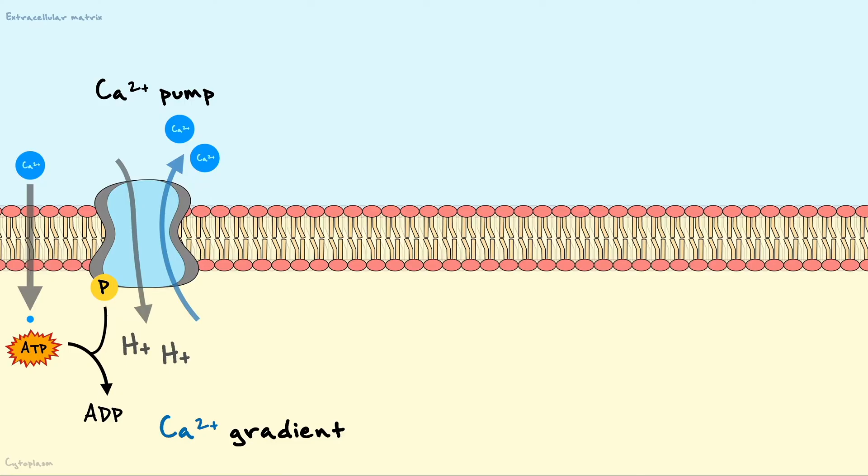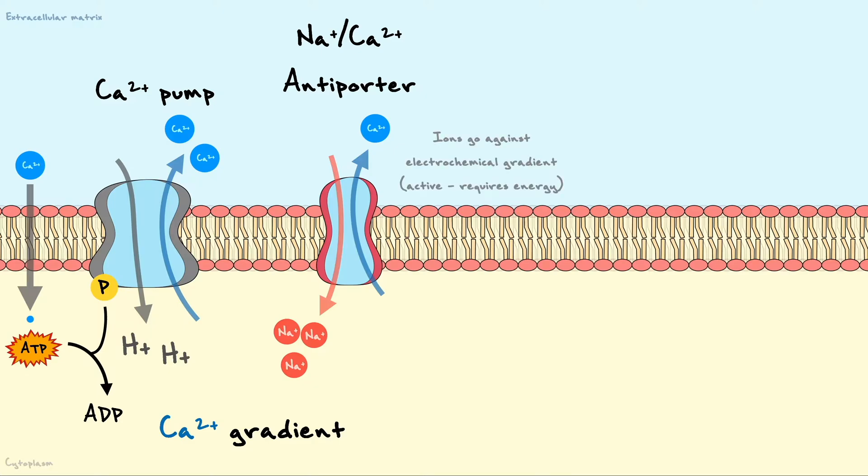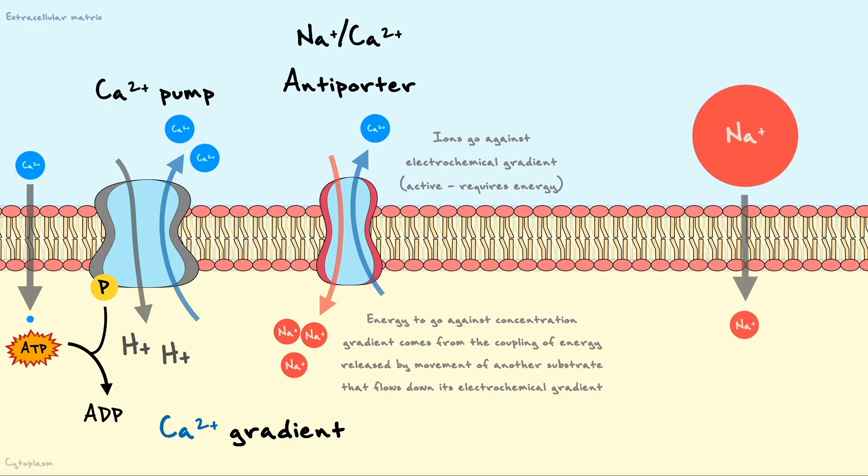Furthermore, calcium can be transported in the extracellular matrix through the sodium-calcium antiporter. Remember that to pump an ion against its electrochemical gradient, it requires energy. Antiporters are a class of ion transporters that generate sufficient energy by coupling the transport of another ion that goes down its electrochemical gradient. In this case, sodium, which we know is more concentrated outside, will have no problem flowing inside through the protein.